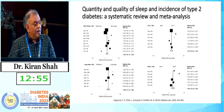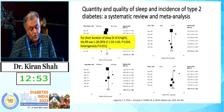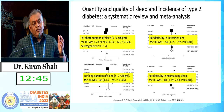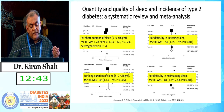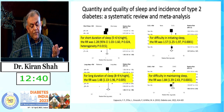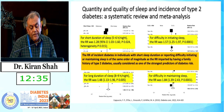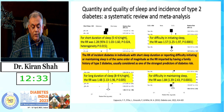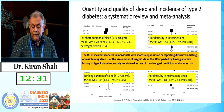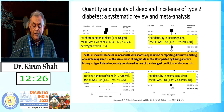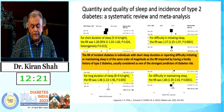A systematic review and meta-analysis covering short sleep, long sleep, difficulty initiating sleep, and difficulty maintaining sleep shows that the relative risk of developing diabetes ranges from 28% to 84%. The relative risk of incident diabetes in individuals with short sleep duration or difficulty initiating or maintaining sleep is of the same order of magnitude as the relative risk imparted by having a family history of type 2 diabetes — usually considered one of the strongest predictors of diabetes risk.